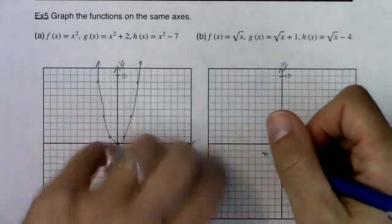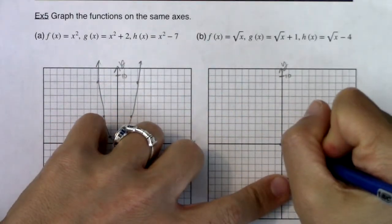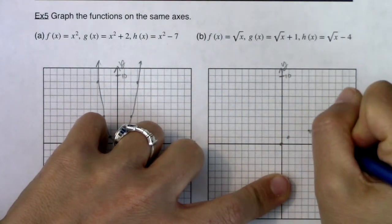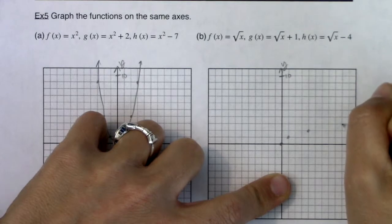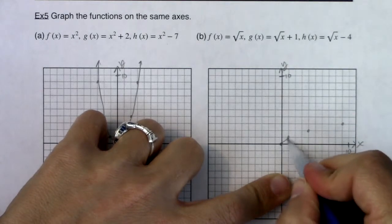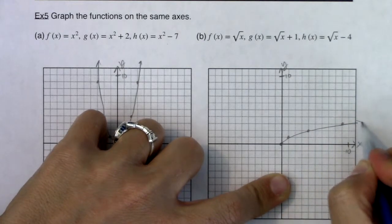For the square root of x here, we've got 0, 0, 1, 1, 4, 2, and then 9, 3. Alright.